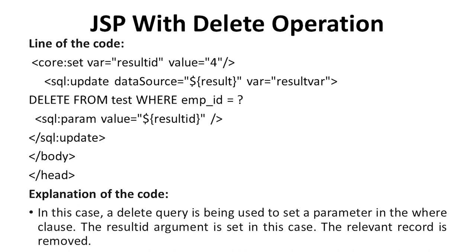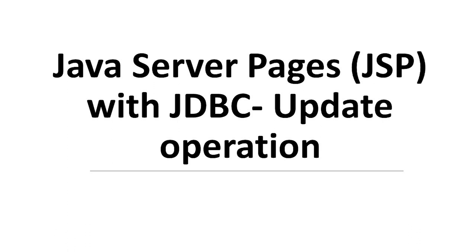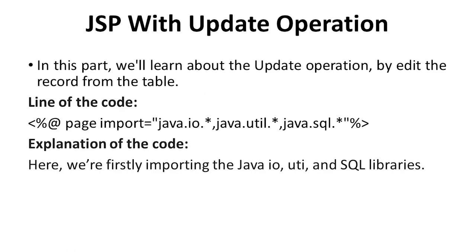The record which has id equal to 4 is removed. So this is the line of the code. Next is JSP with JDBC update operation. In this part, we will learn about the update operation by updating the record from the table.